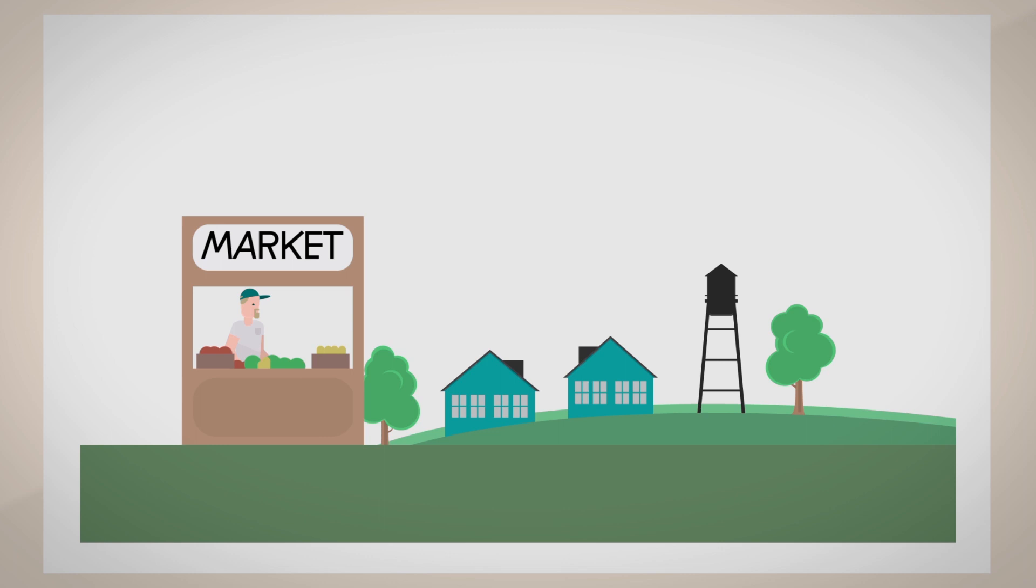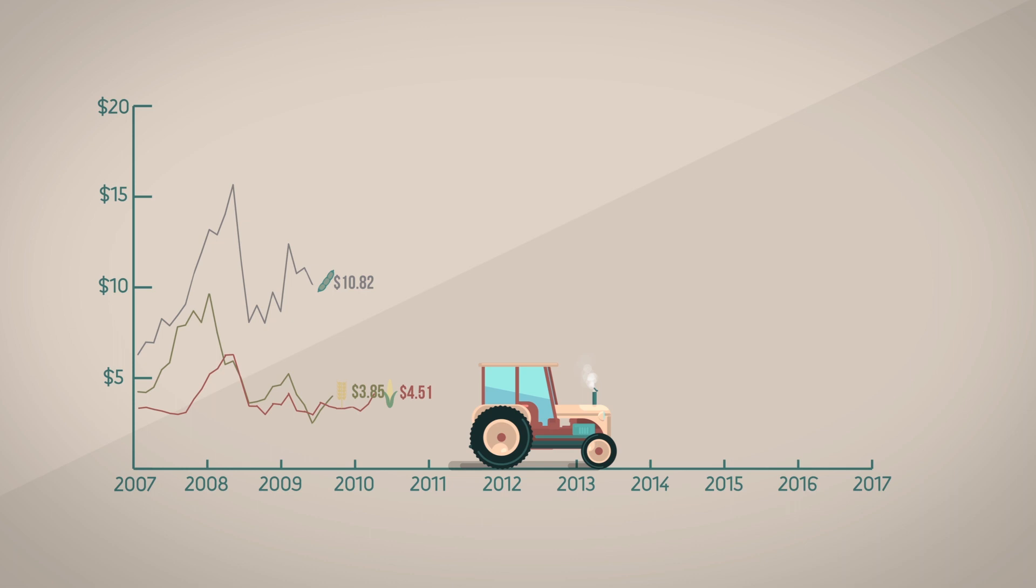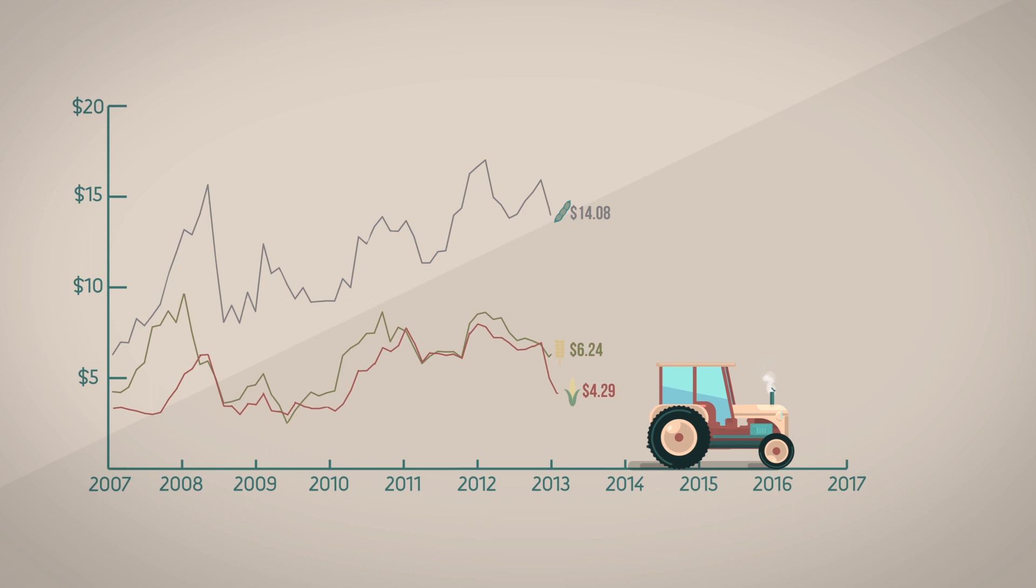But they can't do it alone. Family farmers operate in a unique marketplace over which they have almost no control. Prices swing wildly from year to year and weather events pose a constant threat to a farmer's yield. When a farmer is unable to stay afloat, the impact is felt through our entire food system.